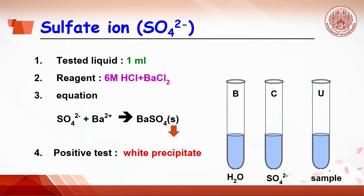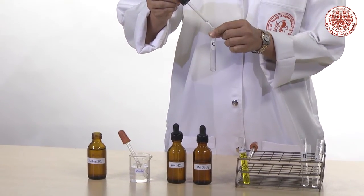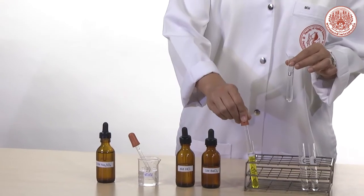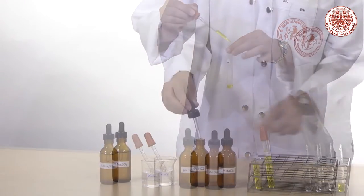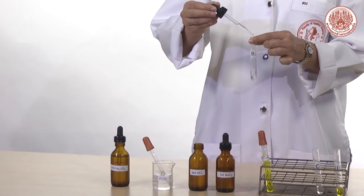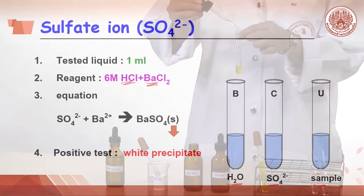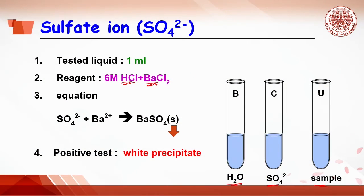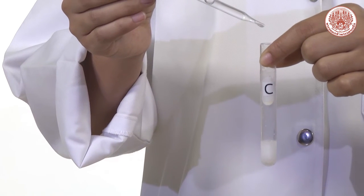Second ion is sulfate ion. Do the same for B tube, C tube and U tube by adding 20 drops of water, sulfate ion from sodium sulfate, and sample. The reagents are added by 20 drops of hydrochloric acid, followed by 2 or 3 drops of barium chloride. Sulfate ion will react with barium ion to get barium sulfate, which is a white precipitate.